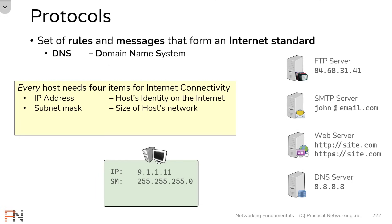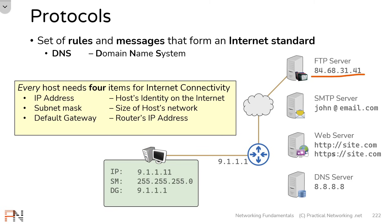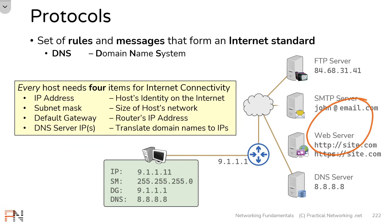But if this host needs to speak to something on a foreign network — for instance, the internet — that host is going to need a router. Specifically, that host is going to need the router's IP address configured as that host's default gateway. With these three elements configured, this host can now speak through the router to the internet to any server using its IP address. But most of the time when you're on the internet, you're looking at websites or trying to send email, and you can't speak to domains without converting those into an IP address first. Which means the fourth item that every single host needs in order to achieve internet connectivity is the IP address of a DNS server, so that it can translate domain names to IP addresses and communicate with other hosts using their domain names.